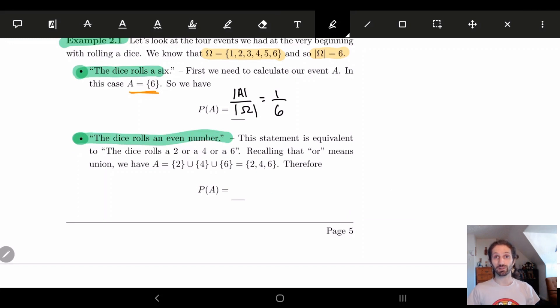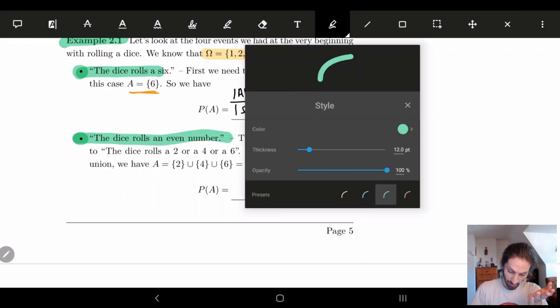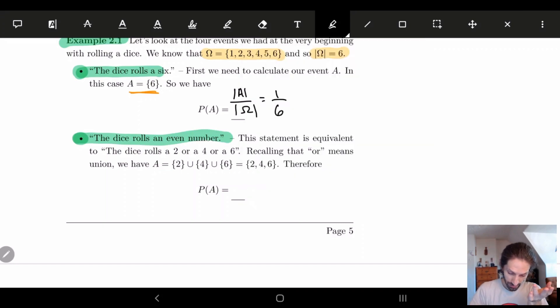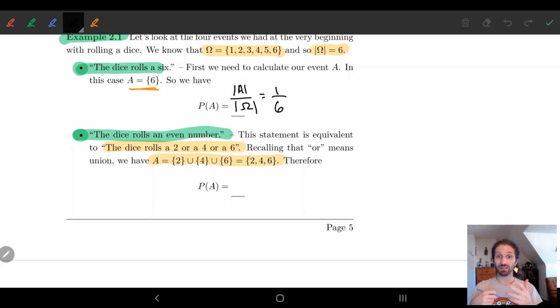The dice rolls an even number is our next example. So if you think about the dice rolling an even number, what we're really asking, and we're going to break this down, right? What we're really asking is we want the dice to roll a two or a four or a six. And so here we're using our language to help us, right? Or and or. So we want to take the union of these numbers. So A needs to be the union of {2}, {4}, and {6}. And so that gives us the set {2, 4, 6}.